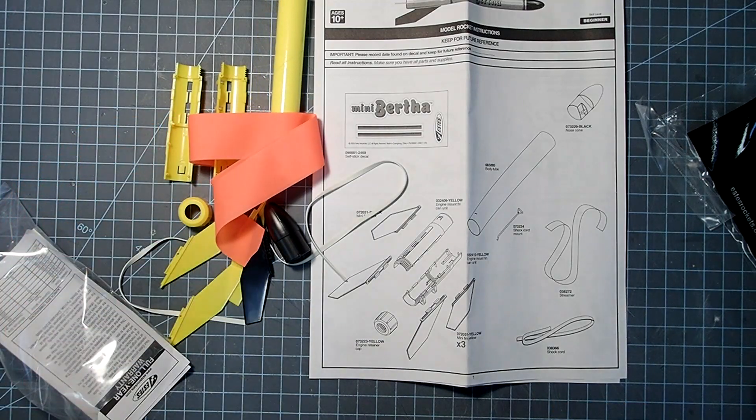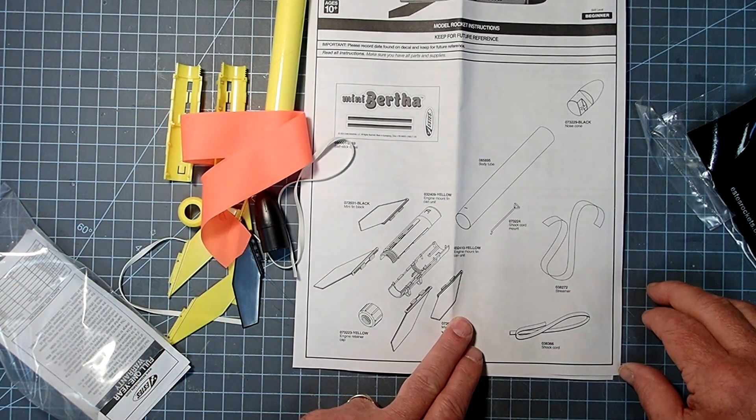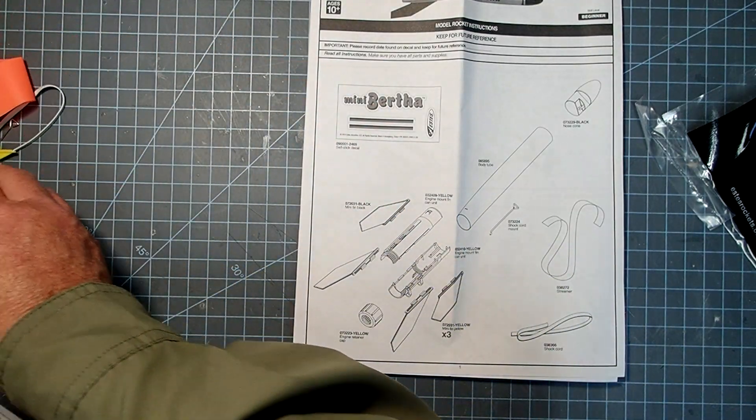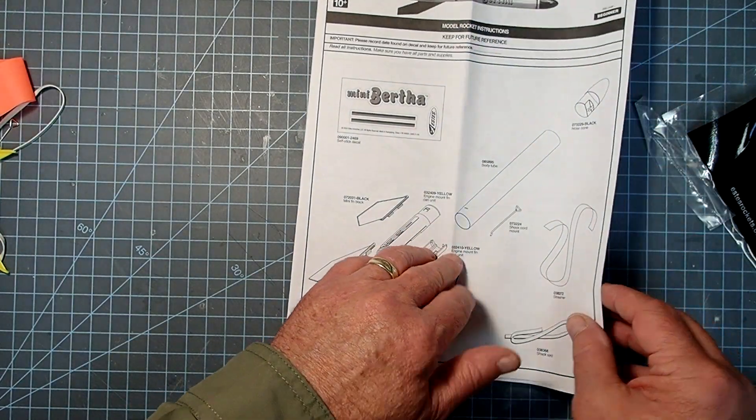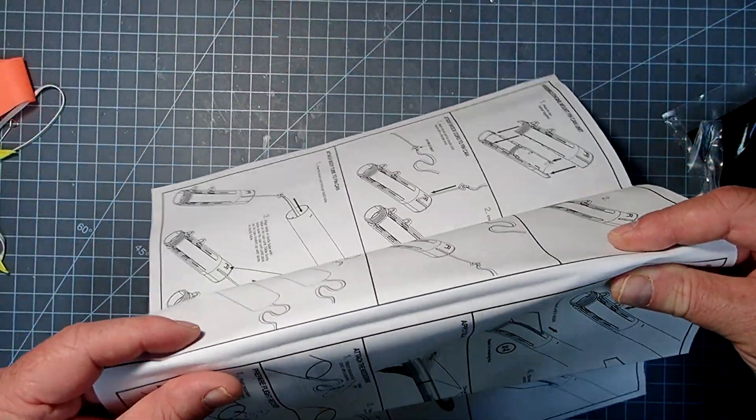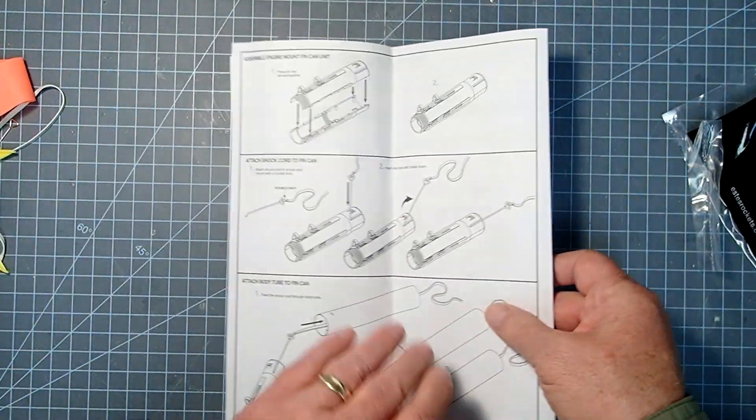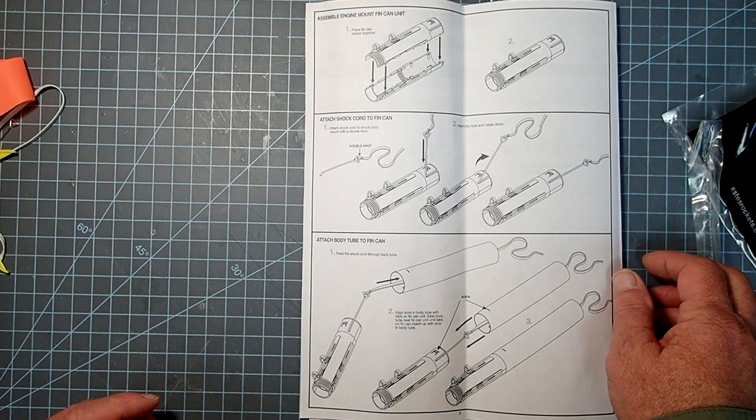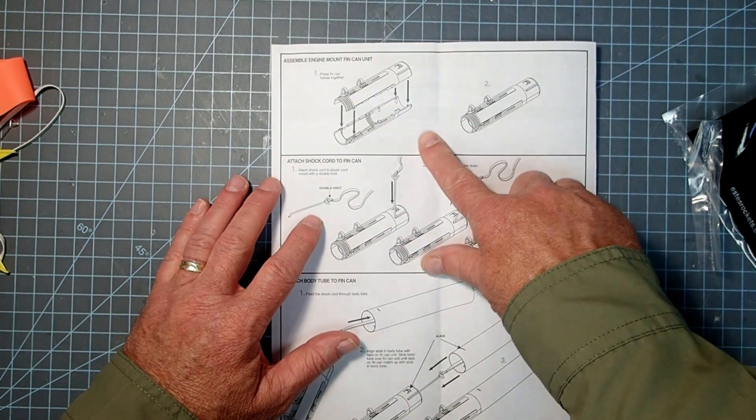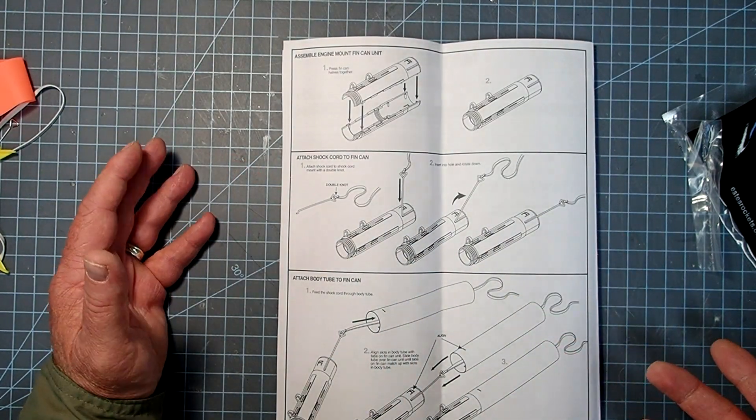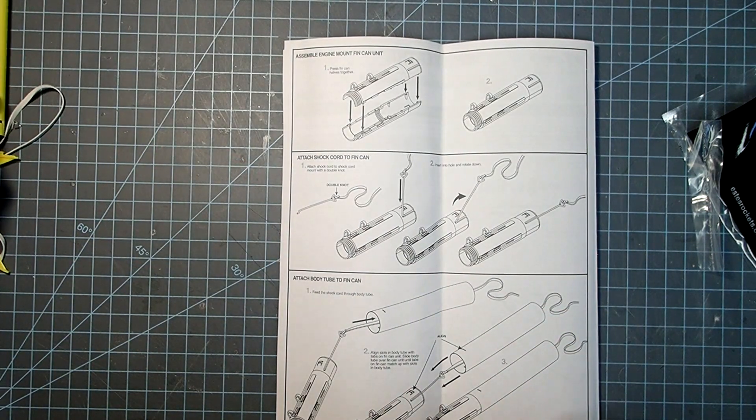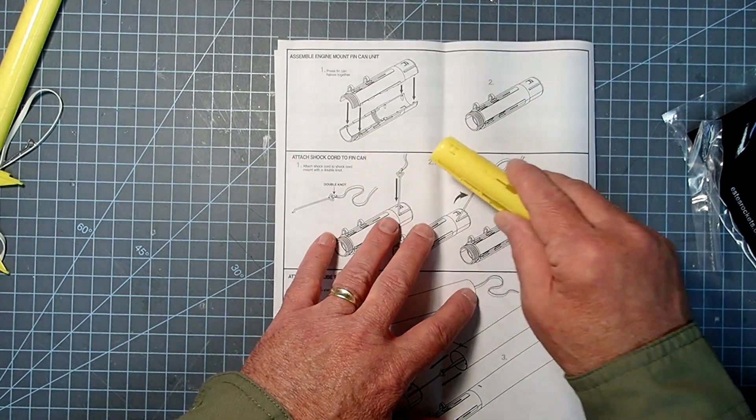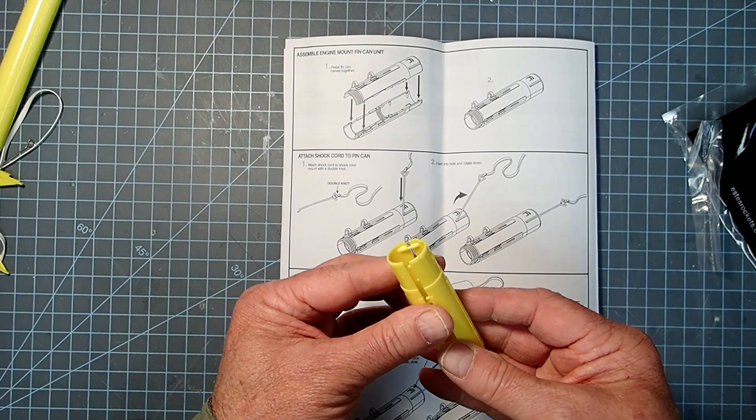It looks like we have everything. So I'm just going to move everything to the side here until we need it. So the first thing we're going to do is put the two halves of the fin can together. And actually, the longest part about building this rocket is going to be waiting for glue to dry. Now, you don't have to glue this. This thing can be put together essentially with no glue whatsoever. I do recommend gluing it though.